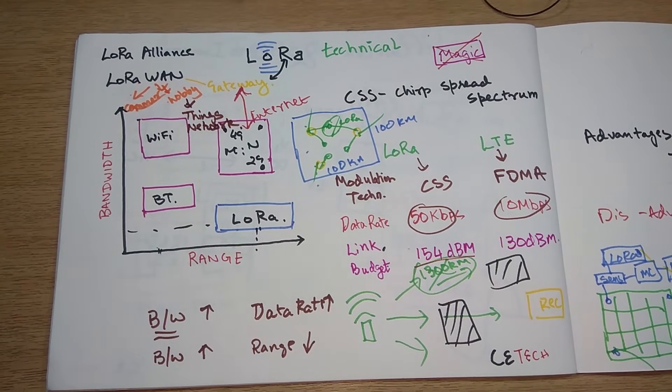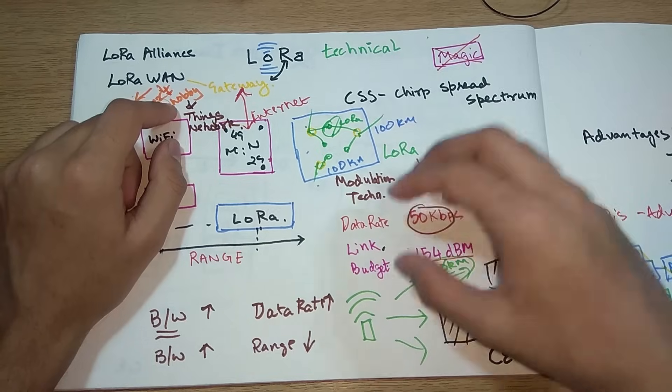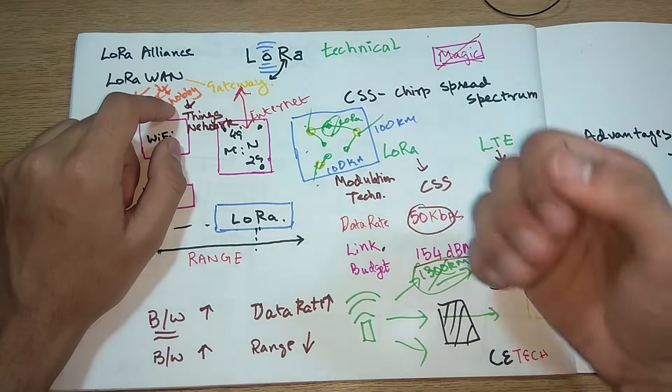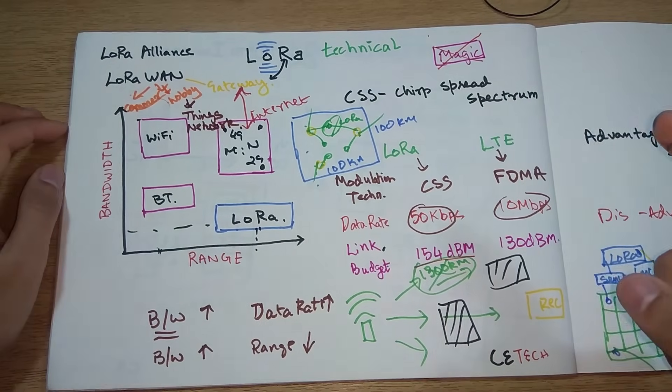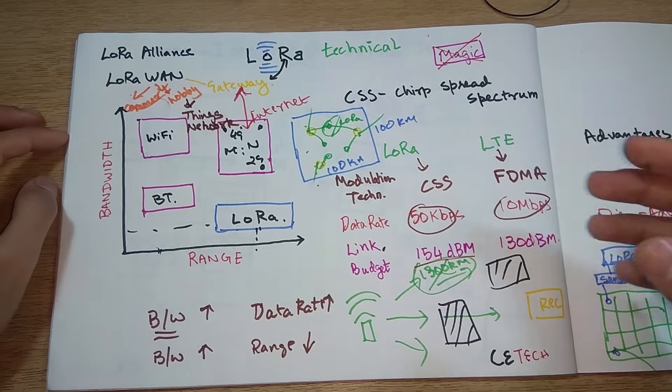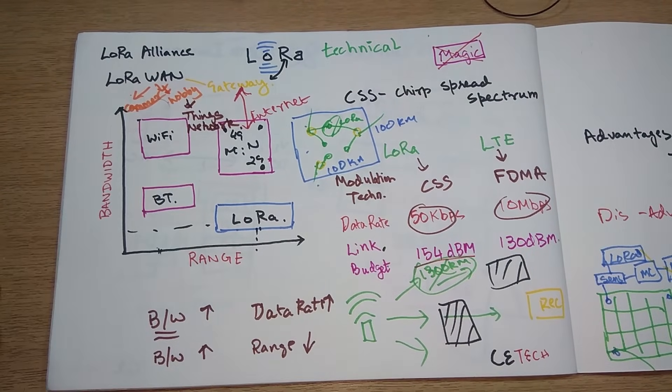According to hobby wise or community wise, you can use LoRaWAN using a site called The Things Network. Using The Things Network you can access a LoRaWAN gateway, all the people, general public have their gateways installed, you can send data to their gateways and vice versa. You can also set your gateways. I recommend you do that so that you also contribute to the community.